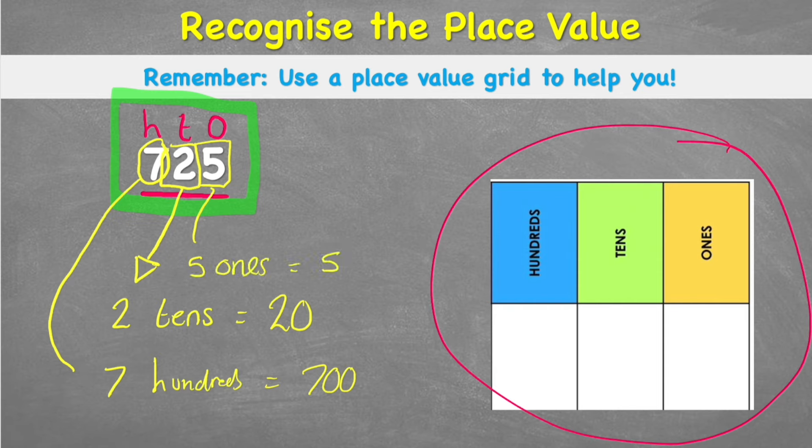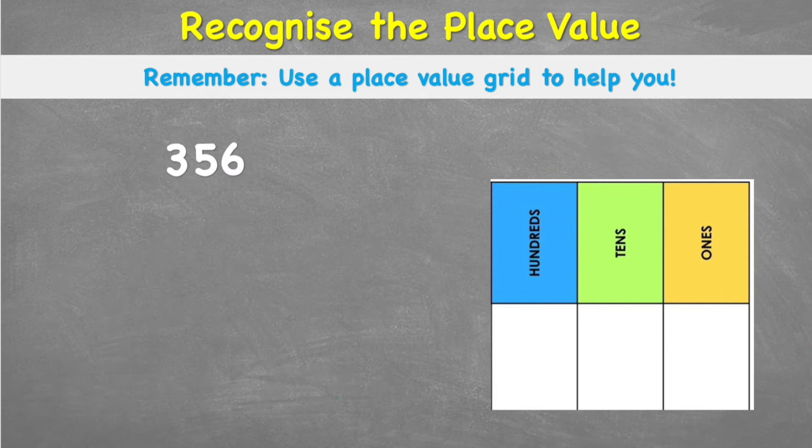And what we should always find is that when we've broken our number down like this, when we add it back together, we should end up with the same number. And 700 plus 20 plus 5 equals 725. Let's have a look at another number.